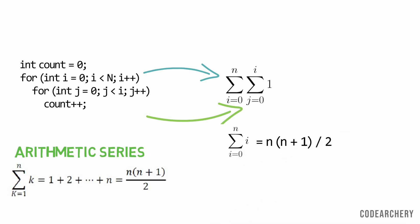If I further solve this equation, I will get n square plus n divided by 2. So the time complexity of this loop is n square.